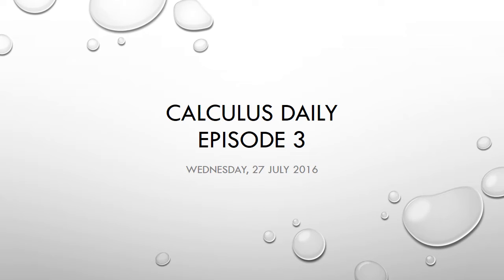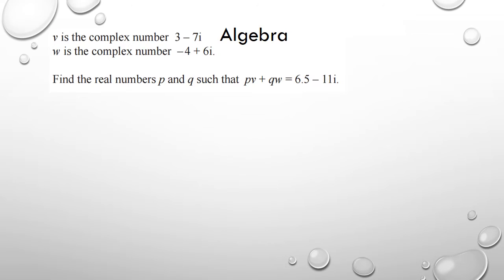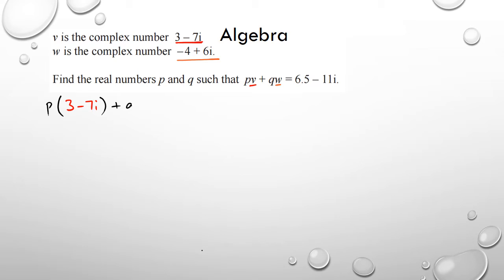In this question you've got to substitute two complex numbers. You substitute v and w, where w is given, and that's how you start off. So I have p multiplied by 3 minus 7i — that's my v — plus q times w, which is negative 4 plus 6i.